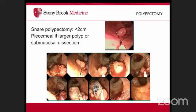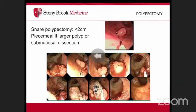For polyps, polypectomy with a snare is appropriate for lesions under two centimeters. Inject saline into the submucosal space to lift sessile polyps before removal. Large masses may require piecemeal resection. For malignant-appearing or large lesions, take multiple biopsies for adequate tissue diagnosis and tattoo the area — in at least three different spots, including proximal to the lesion — to aid surgical localization.